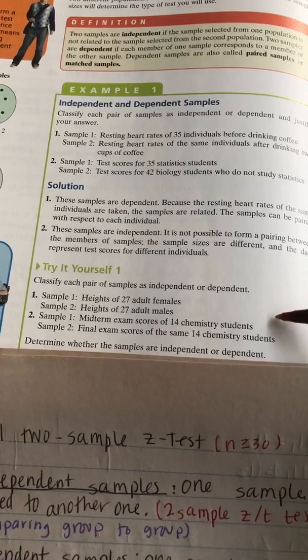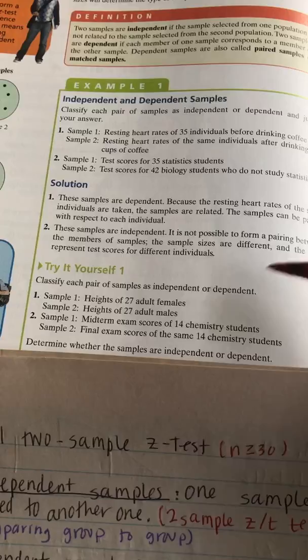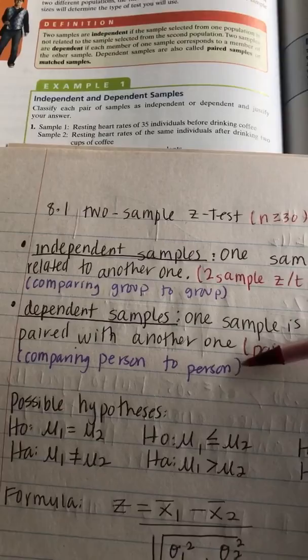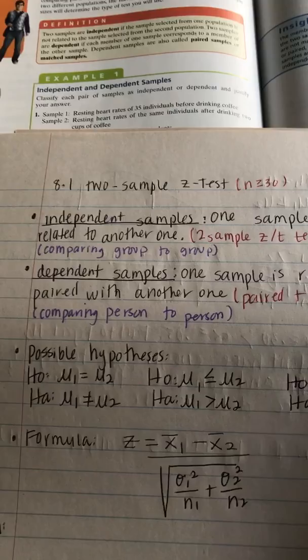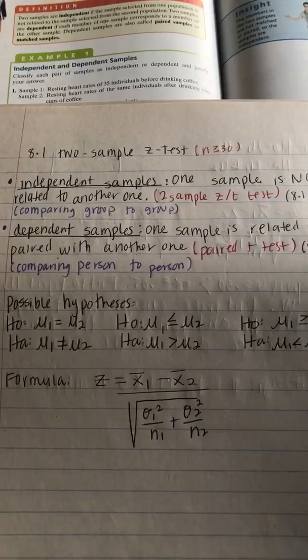The last example: you're comparing the midterm score of 14 chemistry students with the score on the final of the same students. The keyword here is 'same.' It would be dependent, because you're comparing each person's own midterm score to their final score. I'll send you a copy of these notes.